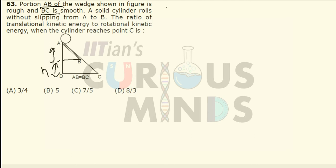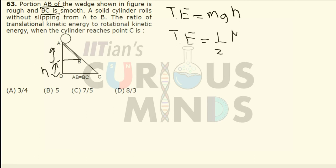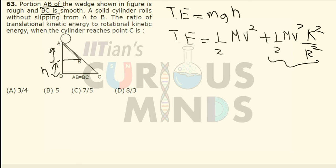The total energy at the top will be equal to mgh. This will be equal to the total energy at point B, which equals half mv² plus half mv² times k²/r². Here, k²/r² corresponds to the rotational kinetic energy term and half mv² corresponds to the translational kinetic energy.